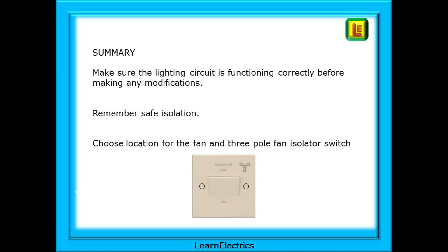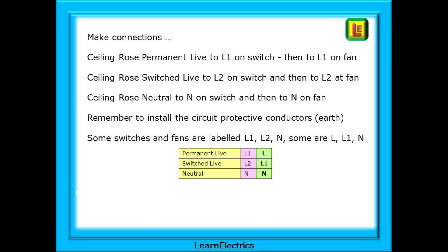That is a brief introduction to bathroom fans. In summary, always make sure that the lighting circuit is functioning correctly before making any modifications, and do remember safe isolation. Then choose a location for the fan and 3-pole fan isolator switch. Now make the connections: ceiling rose permanent live to L1 on the switch, then to L1 on the fan; ceiling rose switched live to L2 on the switch, then to L2 on the fan; ceiling rose neutral to N on the switch (sometimes labelled L3), then to N on the fan. Remember to install the circuit protective conductors — the Earths. Some switches and fans are labelled L1, L2, and N, and some are labelled L, L1, and N depending on the manufacturer, and this little table shows this.